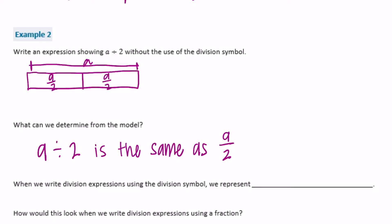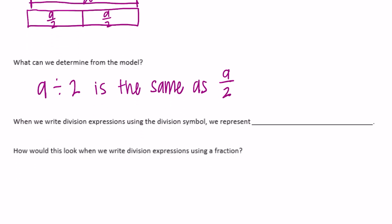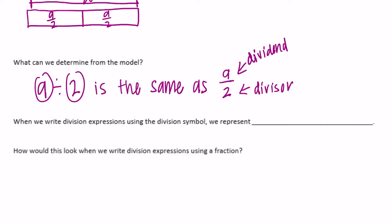When we write division expressions using the division symbol, we represent the dividend — the top number — divided by the divisor. The dividend goes on the top as the numerator and the divisor on the bottom as the denominator. So when we write division expressions as a fraction, it looks like: dividend over the divisor.